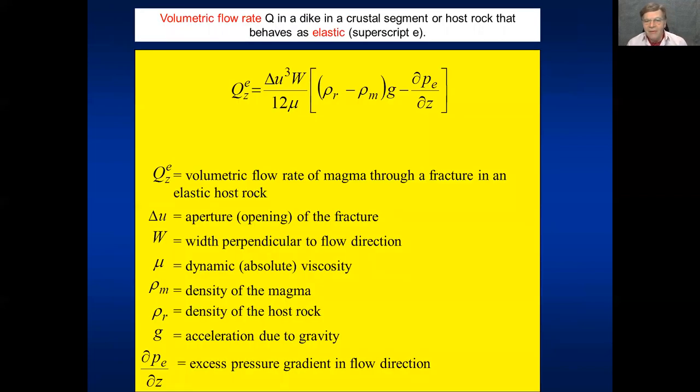So again, we have now the same equation, except buoyancy comes now into play. Buoyancy comes into play. The other parameters are exactly the same as in the last equation, except we use the superscript E for elastic. E for elastic. So here we are taking buoyancy into account. And we've already discussed all these parameters here. The volumetric flow rate, the aperture, the width perpendicular to the flow direction, that will often for a feeder dike be the length of the dike, or the strike dimension of the dike. Mu is the dynamic viscosity, and rho m is the density of the magma, rho r is the density of the rock, and g is acceleration due to gravity, and then we have the pressure gradient.